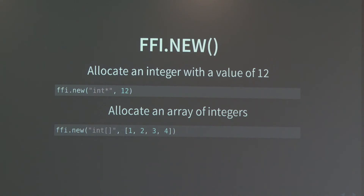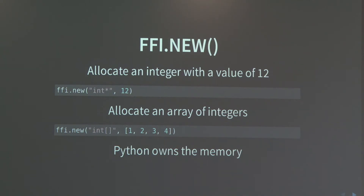For structures, you should allocate the structure first and then set the fields on it. Python owns the memory, which means that whenever your object goes out of scope — if it disappears completely from Python — it will be freed. Most of the time that's what you want, but you have to be careful: if the C code you're passing memory to stores that pointer, and then it goes out of scope in Python, that memory will be freed, and if the C code tries to access that pointer again, you're accessing a freed pointer, and who knows what can happen.